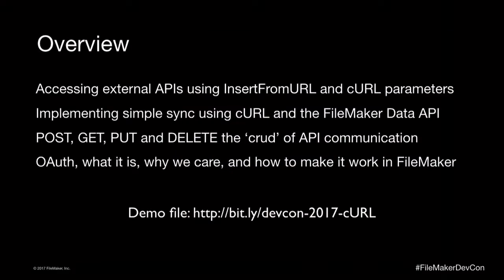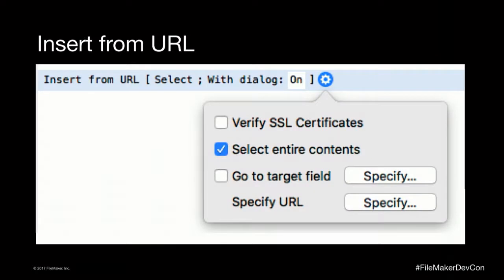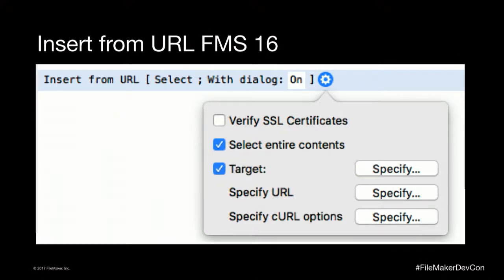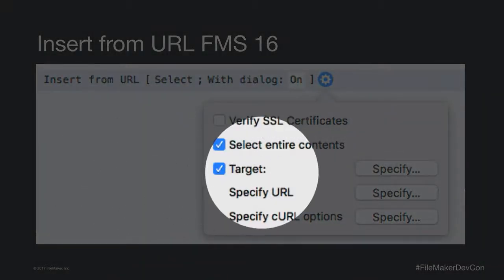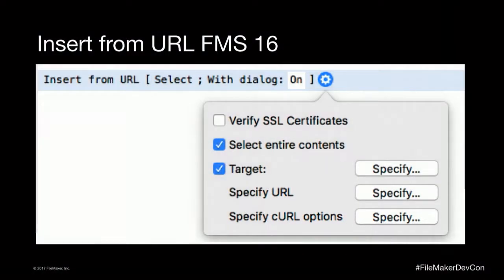Today what we're really going to look at is one single script step that got a major overhaul in FileMaker 16, and that is our good friend Insert from URL. Here's the Insert from URL config from FileMaker 15 and prior. It's got four options available. In FileMaker 16, it doesn't look a lot different — it's just got this one really cool bit at the bottom that lets us specify curl options, and that's really what this session is all about.